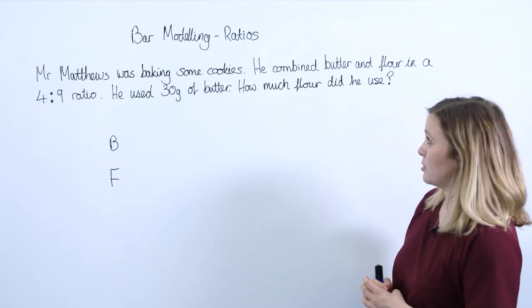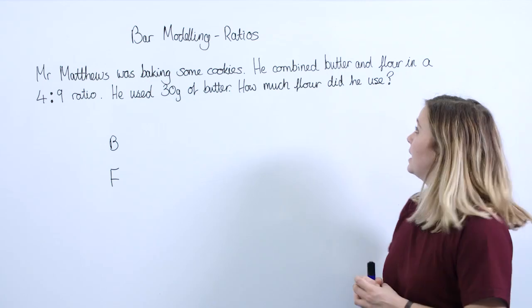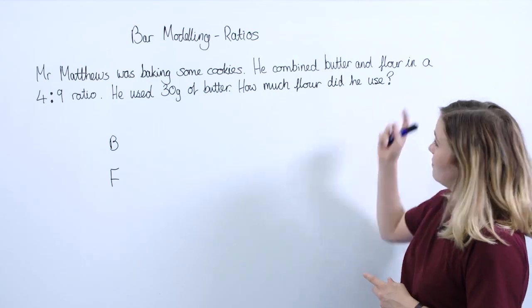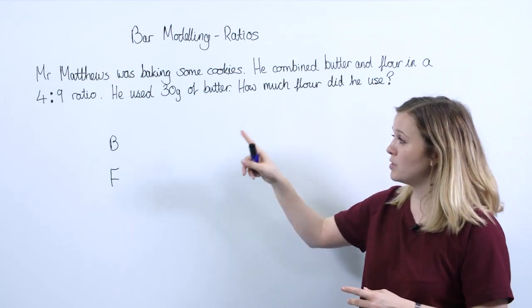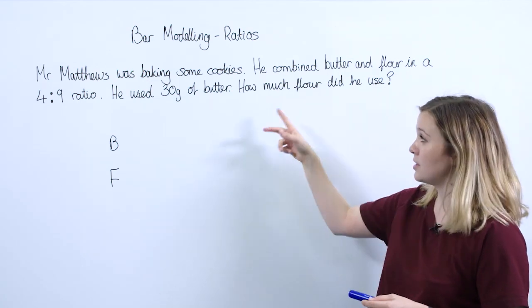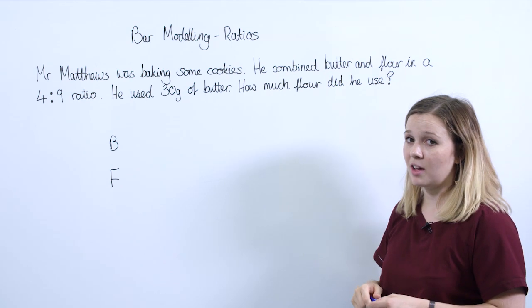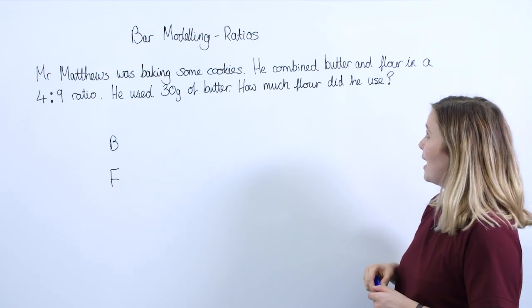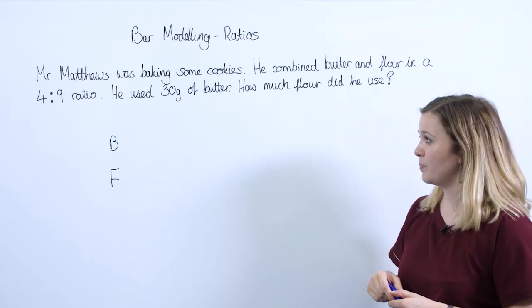Mr. Matthews was baking some cookies. He combined butter and flour in a four to nine ratio. He used 30 grams of butter. How much flour did he use?